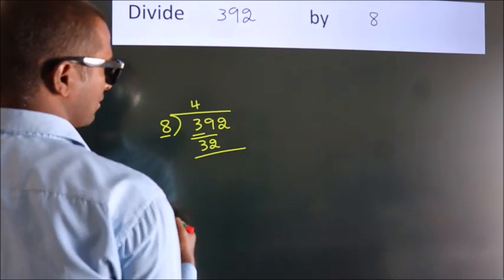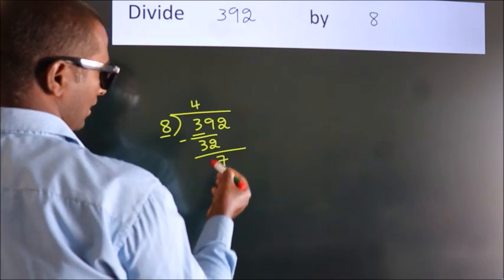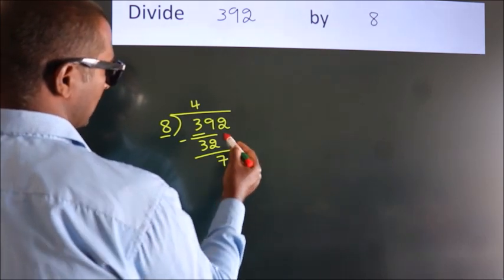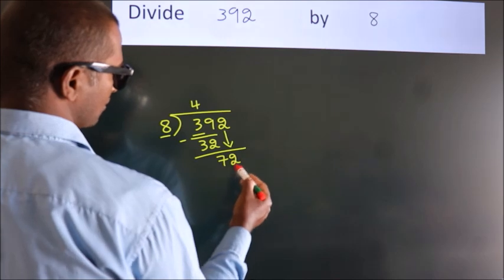Now we should subtract. We get 7. After this, bring down the next number. So, 2 comes down. So, 72.